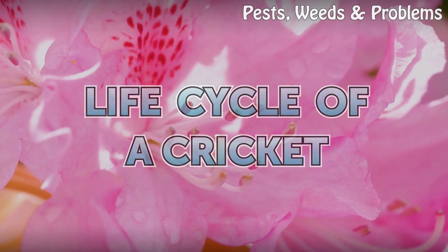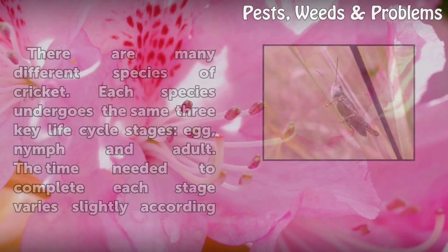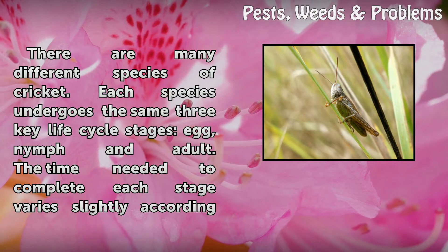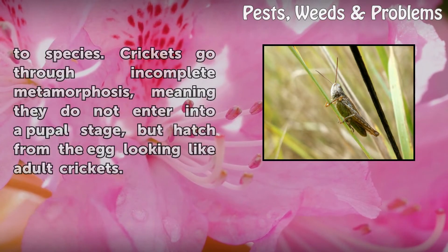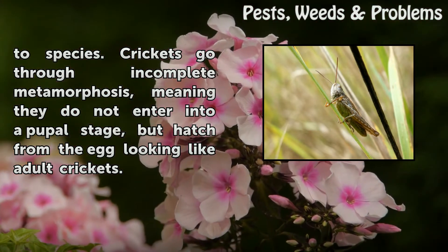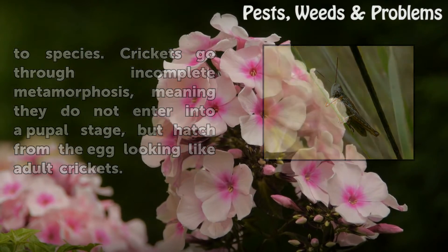Life Cycle of a Cricket. There are many different species of cricket. Each species undergoes the same three key life cycle stages, though the time needed to complete each stage varies slightly according to species. Crickets go through incomplete metamorphosis, meaning they do not enter into a pupal stage, but hatch from the egg looking like adult crickets.